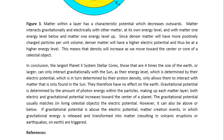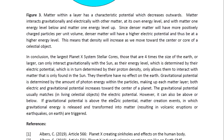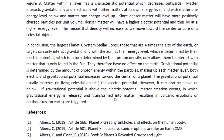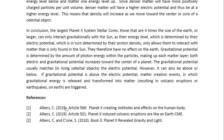They therefore have no effect on the Earth. Gravitational potential is determined by the amount of photon energy within the particles making up each matter layer. Both electric and gravitational potential increase towards the center of a planet. The gravitational potential usually matches the electric potential in living celestial objects; however, it can also be above or below. If gravitational potential is above the electric potential, matter-creation events — in which gravitational energy is released and transformed into matter — are triggered, resulting in volcanic eruptions or earthquakes on Earth. Those are the references.